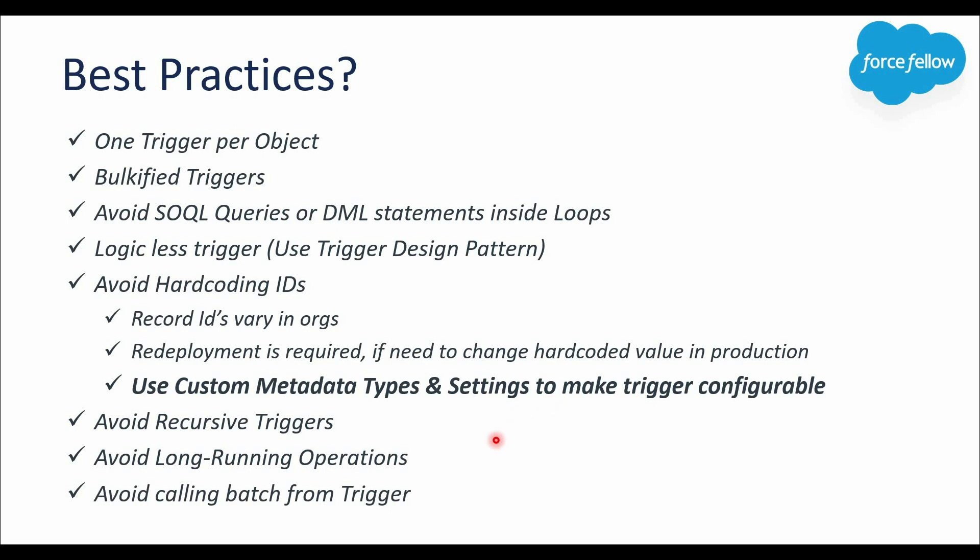Next, avoid calling Batch classes directly from triggers. This is generally not recommended because of governor limits — an org can only have five active batch jobs at a time, or 100 more if Apex Flex Queue is enabled. Triggers are called frequently per user requests, so submitting batch jobs from triggers can easily hit those limits. Instead, use a scheduled batch job.